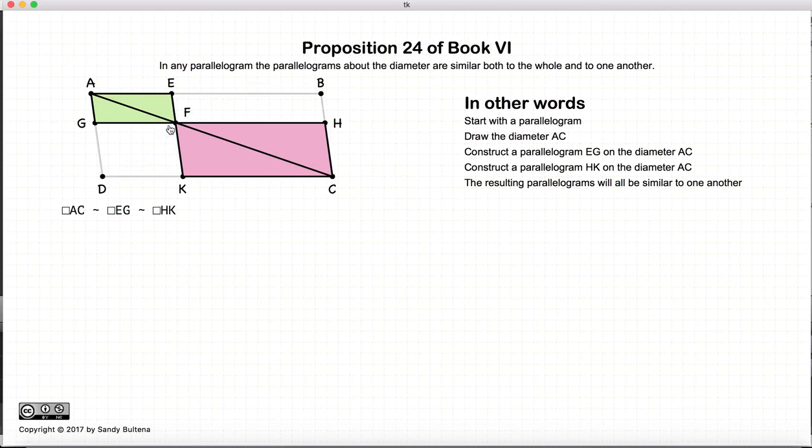And this proposition states that the three parallelograms, so ADCB, or this entire parallelogram, will be similar to this little green parallelogram, which will also be similar to this pink parallelogram.